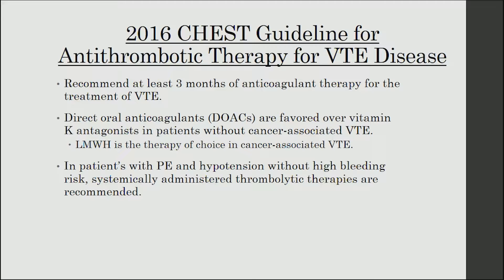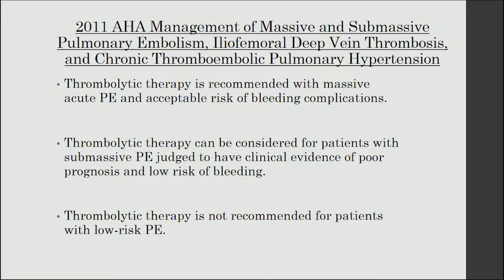Now we're going to take a look at current guideline recommendations regarding the treatment of PE, starting with the 2016 CHEST guideline for antithrombotic therapy for VTE disease. These guidelines recommend at least three months of anticoagulant therapy for the treatment of VTE, although therapy can be longer depending on patient-specific factors. The guideline specifically recommends the use of direct oral anticoagulants, or DOACs, over vitamin K antagonists in patients without cancer-associated VTE. The therapy of choice in cancer-associated VTE would be low molecular weight heparin. Lastly, this guideline does endorse the use of thrombolytic therapy in patients with PE and hypotension who are also without high bleeding risk.